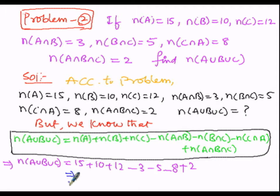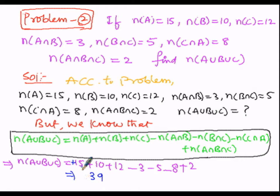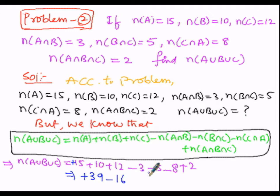Let us add up all the positives: 15, 10, 12, and 2 are all positive. 15 plus 10 is 25, 25 plus 12 is 37, 37 plus 2 is 39. So the sum of positives is 39. Now let us add up all the negatives: 3, 5, and 8 are negative. 5 plus 3 is 8, 8 plus 8 is 16. The sum of negatives is 16, and since all are negative, 16 takes the sign of negative.